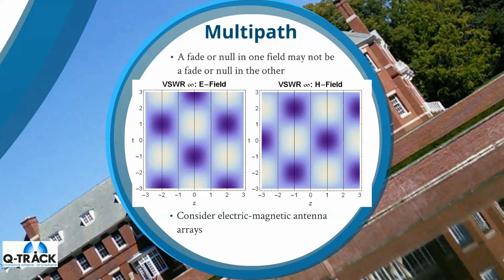Another application is in antenna systems robust in the presence of multipath. If multipath consists of waves propagating in opposite directions, a fade or null in one field is not necessarily a null in the other. In this one-dimensional case, an electric antenna at z equals one would not pick up any electric field, but at that same location the magnetic field is at its maximum. In principle, you could have an electrically small antenna array with both electric and magnetic sensing antennas to create a system more robust with respect to multipath.